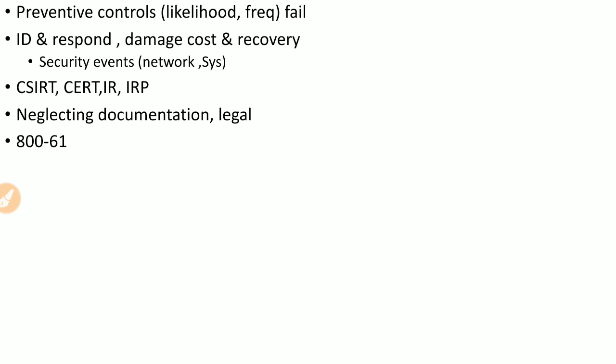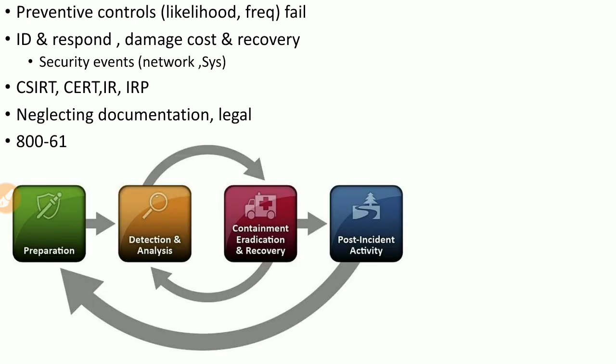NIST SP 800-61 R2 is the publication and guideline for incident response, containing four major steps. Security professionals typically divide the entire process into eight steps, adding four additional ones. The steps are: preparation, detection, containment, eradication, reporting, recovery, remediation, and post-incident activities.